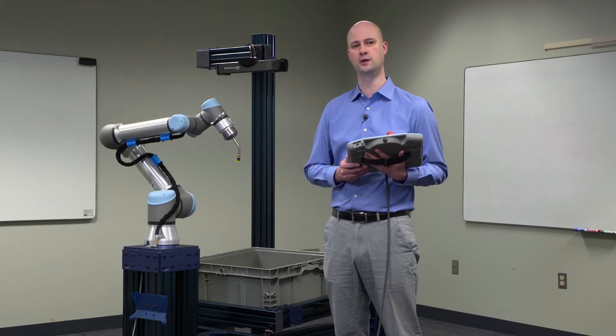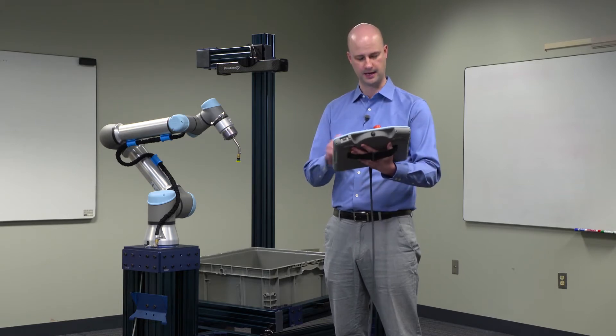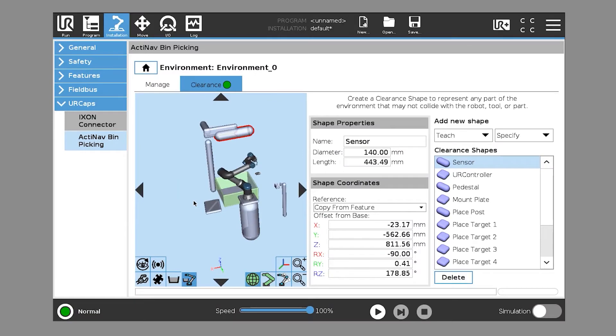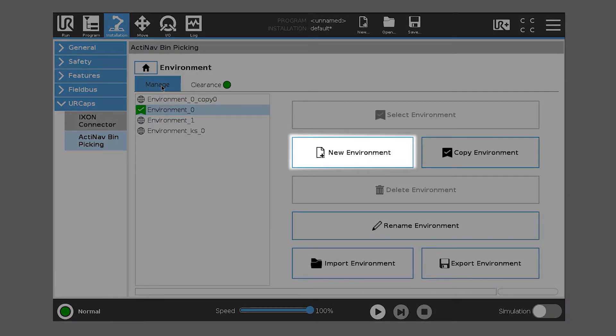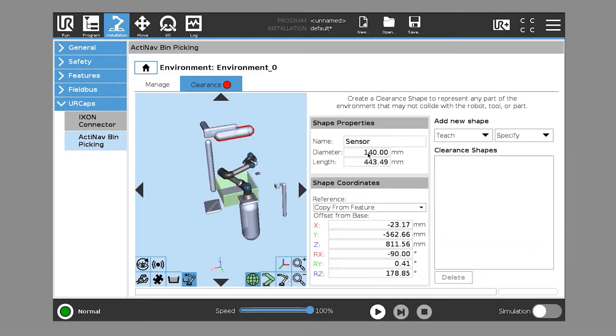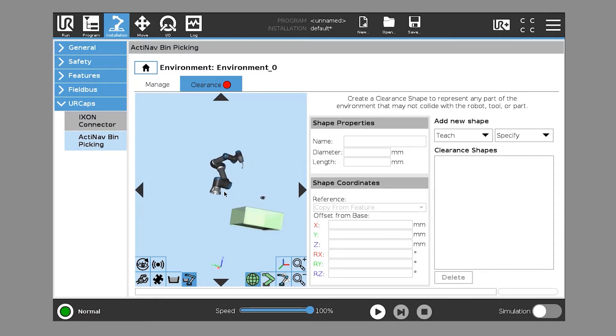Let's go ahead and look at what a blank environment looks like. We'll touch environment, step four, go to our manage tab, and we'll click new environment. When we click a new environment, you see here we have basically just the robot in space, along with a bin.